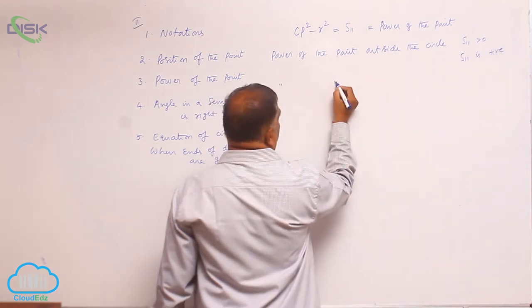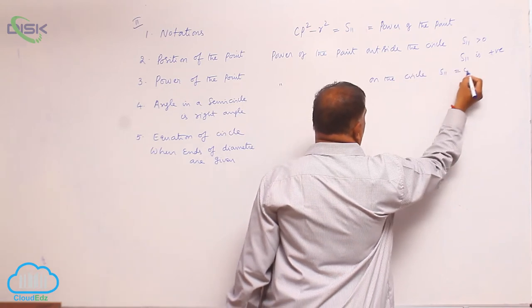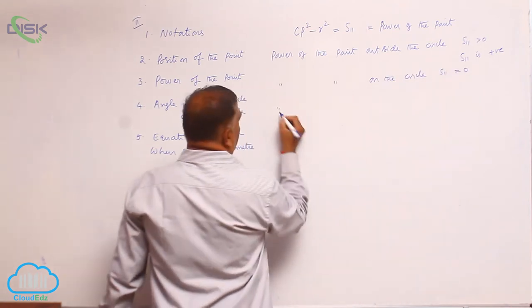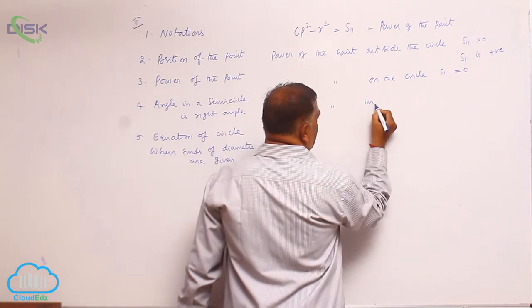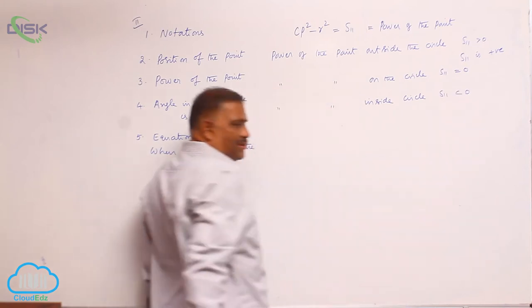Same power of the point on the circle means S₁₁ is equal to zero. Then power of the point inside the circle is S₁₁ less than zero.